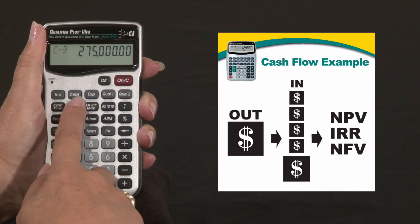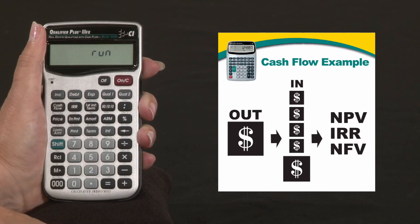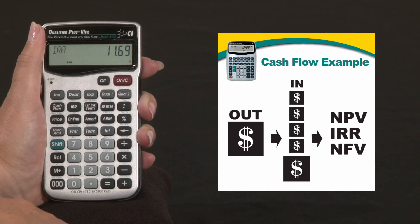Now to calculate the internal rate of return we're just going to press the IRR key. It's going to take a few seconds to run and instead of 10% he's going to get 11.69% back on his money.